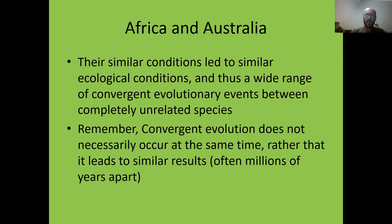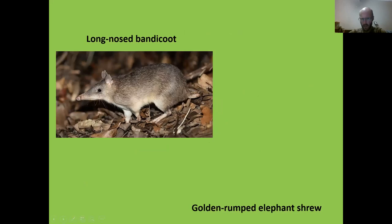Convergent evolution does not necessarily occur at the same time — it rather leads to similar results. A very common example: sharks, dolphins, and ichthyosaurs. Ichthyosaurs existed 200 million years ago; sharks and dolphins live today. Yet ecologically and physiologically they look very similar because the ecological conditions were the same.